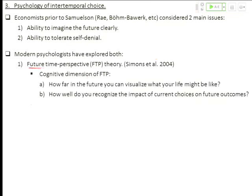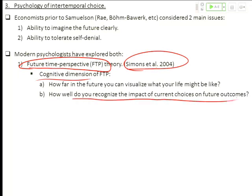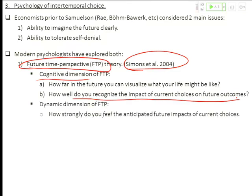So the first of these things, the ability to imagine the future clearly, is now referred to as future time perspective. And there are two dimensions to this in the theory that is reviewed in this Simmons et al paper. The cognitive dimension is how far in the future can you visualize what your life might be like? Can you put yourself there just cognitively? And then cognitively, how well do you recognize the impact of your current choices on future outcomes? So these are all cognitive processes. And then there's what's called a dynamic dimension. I prefer to think of it as an affective or emotional dimension, which is how strongly do you actually feel the anticipated future impacts of current choices.